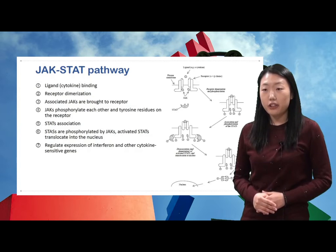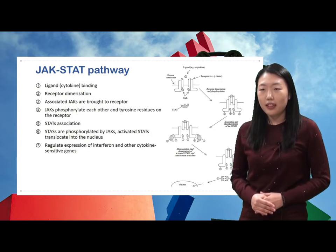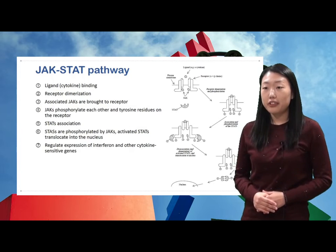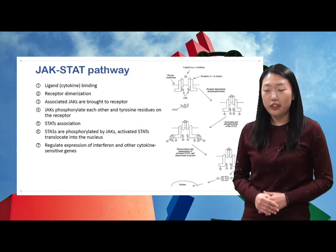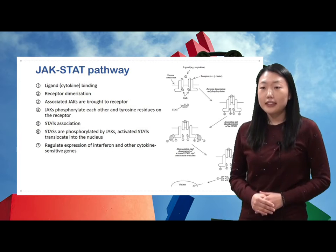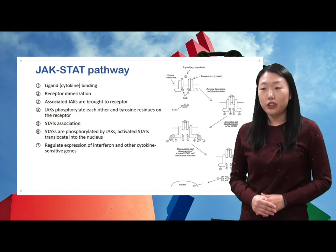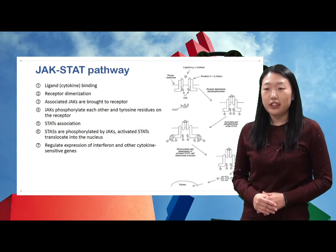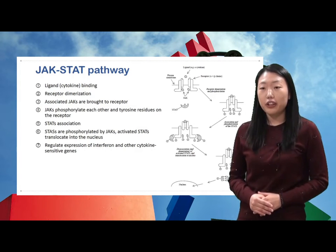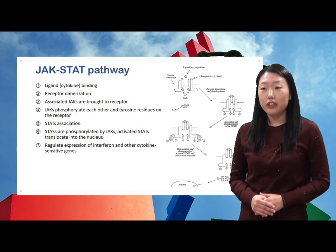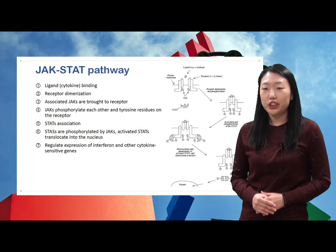The signal transduction of the JAK-STAT pathway proceeds as follows. Cytokines bind to the receptor and initiate receptor dimerization. Associated JAKs are brought close to the receptors and phosphorylation occurs. JAKs transphosphorylate each other, and tyrosine residues are also phosphorylated. STATs are then activated by JAKs through phosphorylation and are translocated into the nucleus, where they directly regulate the expression level of interferon and other cytokine-sensitive genes.